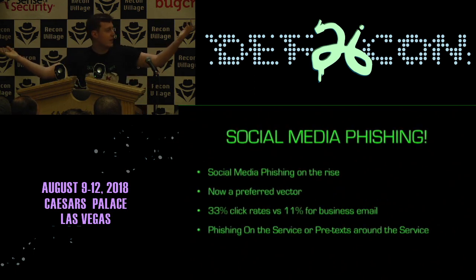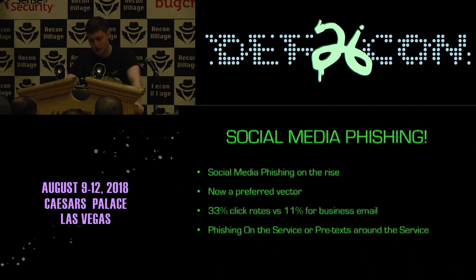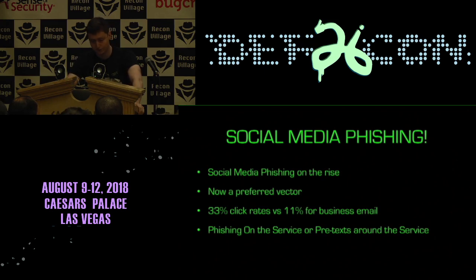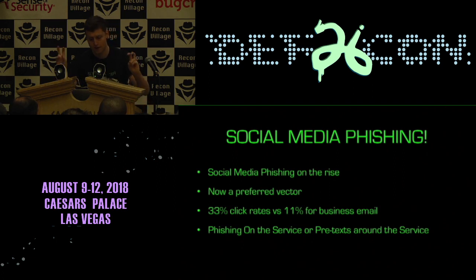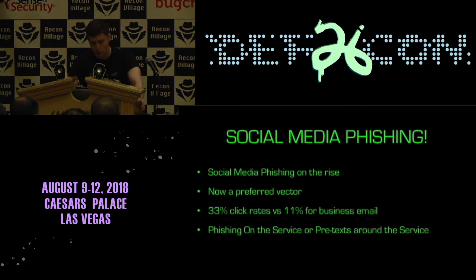So why do you want it? Social media phishing is on the rise — it's now a preferred vector. In 2017 it went up 500% and 100% again so far in 2018, so that's a tenfold increase in the last two years, potentially more by the end of 2018. The reason everyone's starting to phish on social media is the click rate: if your friend contacts you on social media, you're 33% likely to click on it, whereas only 11% if someone contacts you via your business email.